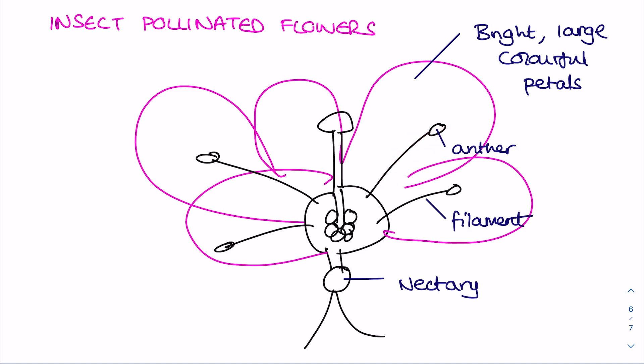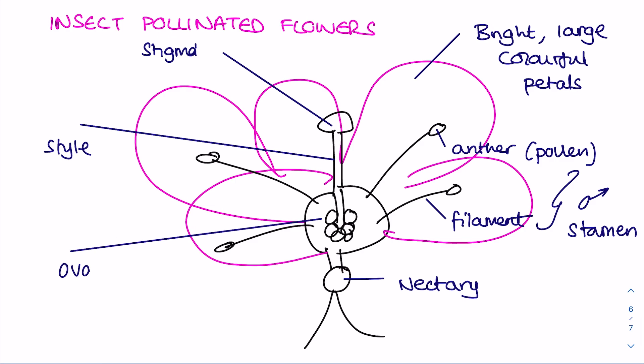Here is the male part of the flower. This bit that holds the pollen is known as the anther. The thin stalk holding that anther in place is known as the filament, and together they're known as the stamen. The female part of the plant is over here and it's made up of the stigma, the style, and the ovary, and collectively those three structures are known as the carpel.